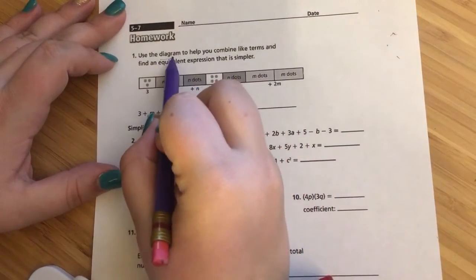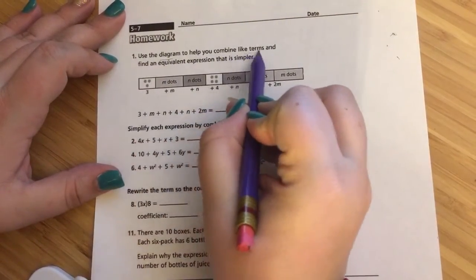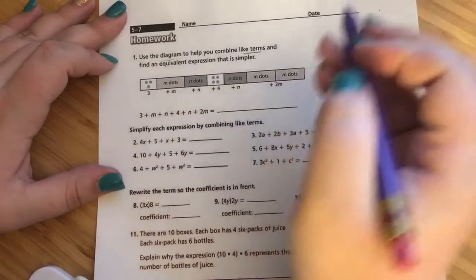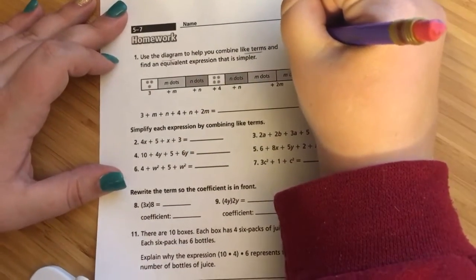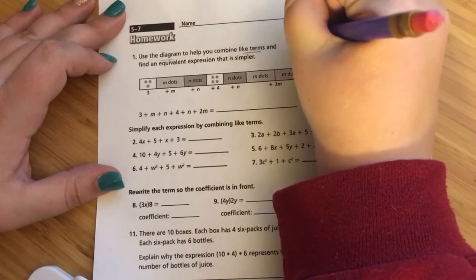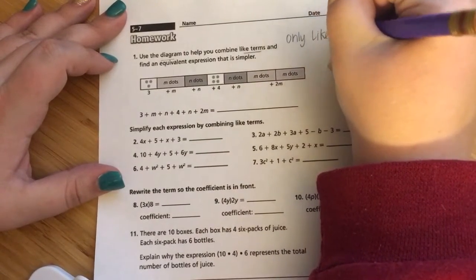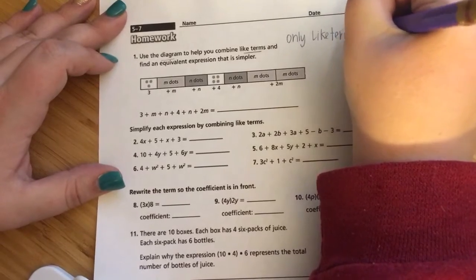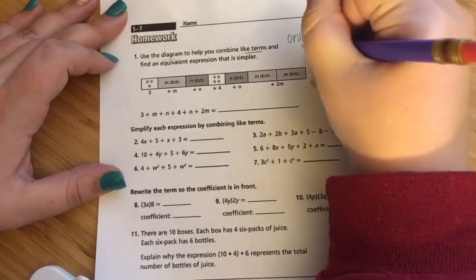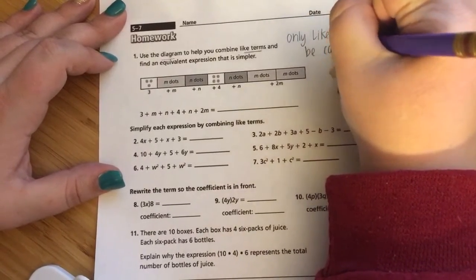But we're going to first look at number one, which is a diagram or a model that you could draw, but they have for you and we need to combine like terms and find an equivalent. Remember, equivalent equals equal. They're equal expressions, but when I combine like terms, I can't put M and N together. It's just not how it works.